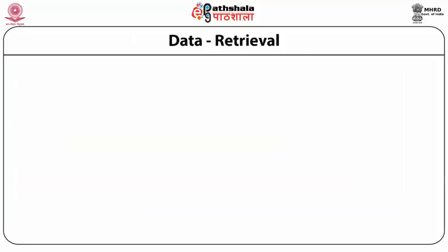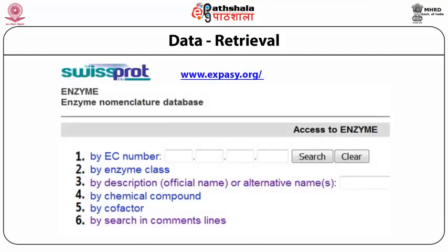In database terminology, all the records — these four records — if stored in a single file will collectively form a database. Till now we have seen records for four enzymes having data values for all the associated data fields. This is the format used by the enzyme nomenclature database stored at SwissProt, which can be reached at the ExPASy server following the www.expasy.org address.